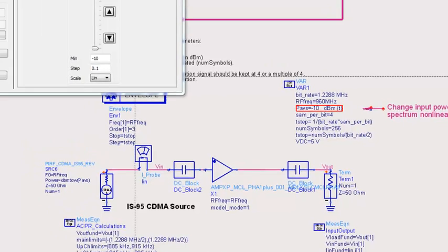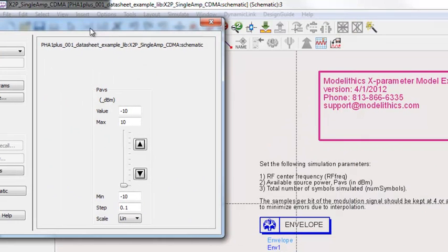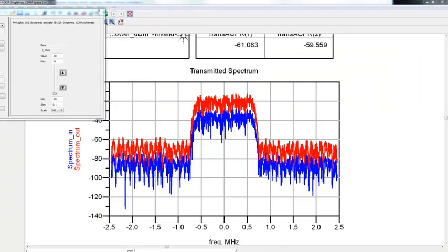We'll use the tune mode to explore variations in the input power on the spectral output. So we'll click on tune and we have this set up to tune the input power between minus 10 and plus 10 dBm.